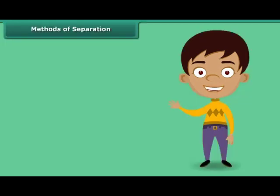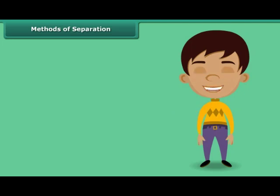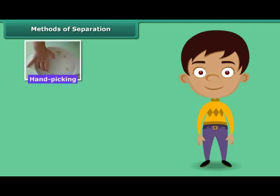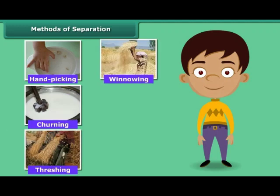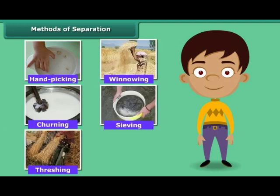You would have some idea about the methods of separation. In fact, you would have used some of these methods in your day-to-day life. Let us list some methods commonly used to separate the components of a mixture: hand-picking, churning, threshing, winnowing, and sieving. The basis for choosing a method of separation depends upon the physical properties of the components.